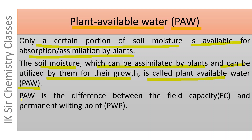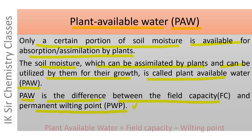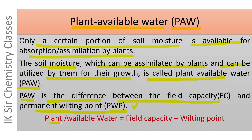Plant-available water is the difference between field capacity (FC) and permanent wilting point (PWP). Permanent wilting point is also called wilting point simply. Thus, plant-available water is equal to field capacity minus wilting point.